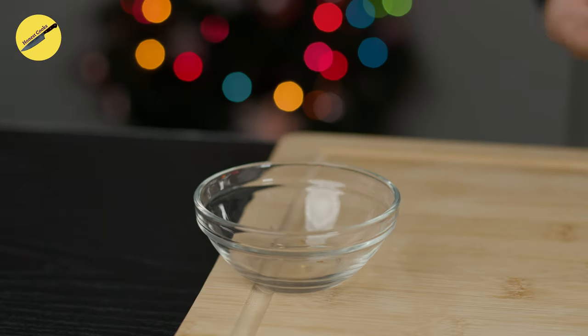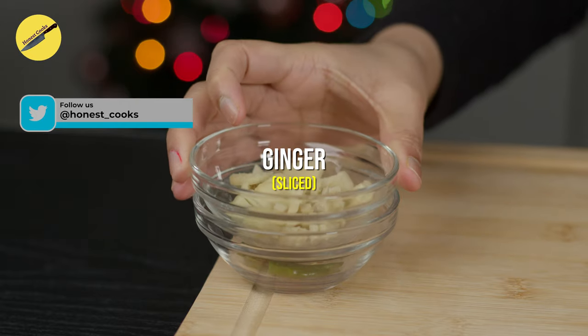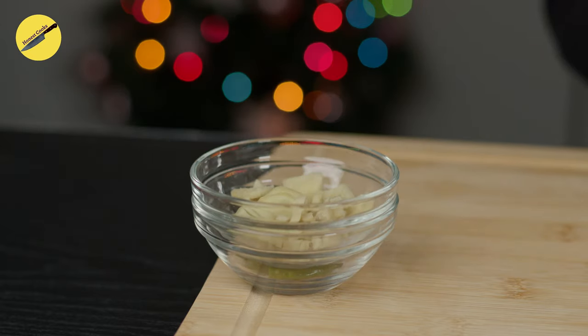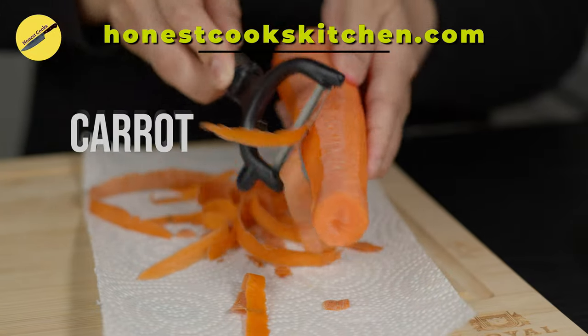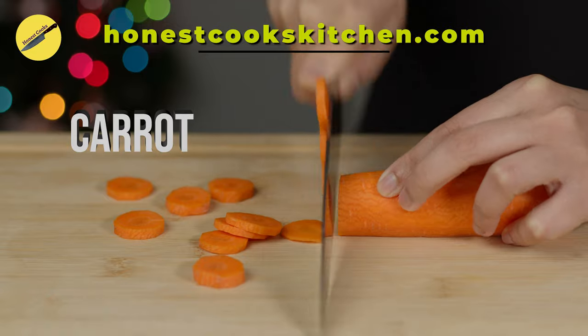Originating in the ancient empire of Gandhar of the Peshawar Valley, Nargil Shorba translates to coconut soup. The complete list of ingredients with the directions is available on our newly launched website honestcookskitchen.com.